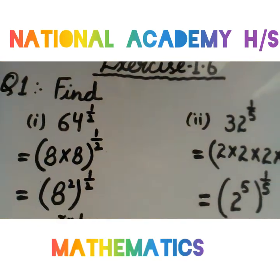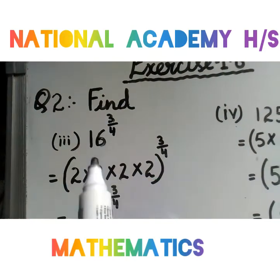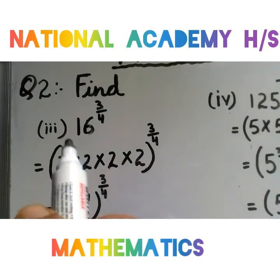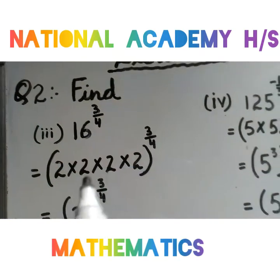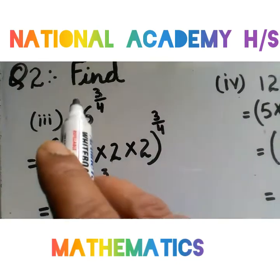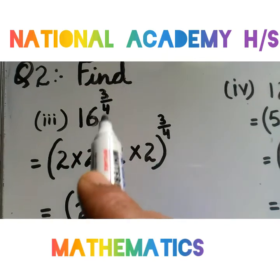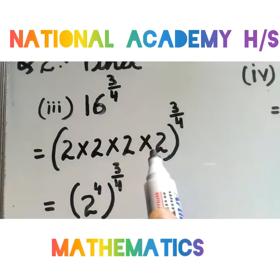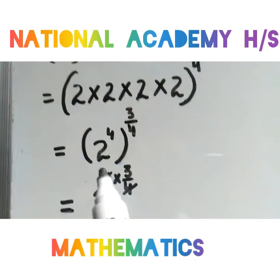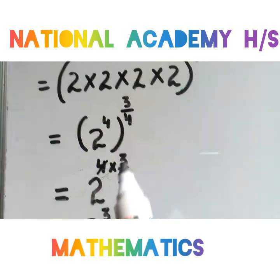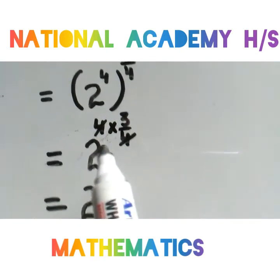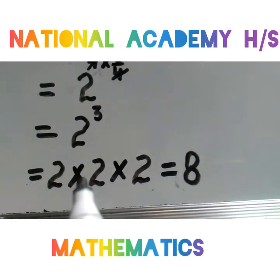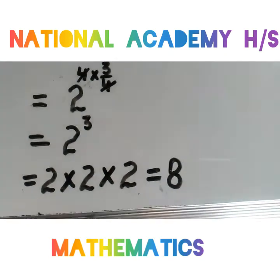Question number 2 के 4 parts हैं — 1st और 2nd आप खुद करें। Third part है 16 की power 3 by 4। Denominator 4 है, तो 4 factors बनाने हैं: 2 into 2 into 2 into 2 — 2 four times, whole power 3 by 4। m into n rule से 4 into 3 by 4 — 4 over 4 cancel, 2 की power 3 यानी 2 into 2 into 2 = 8।